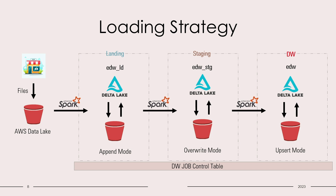This also allows fault tolerance. Consider a pipeline fails in DW — you don't have to start from the beginning. You can just restart the pipeline for DW and your data will get loaded. To understand the whole loading strategy, consider the source files are dropped in the AWS data lake.